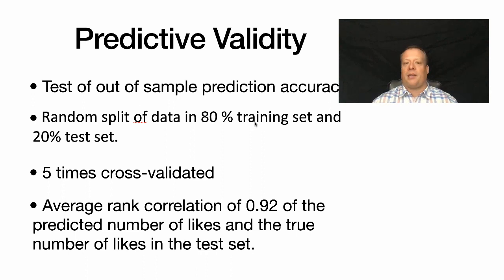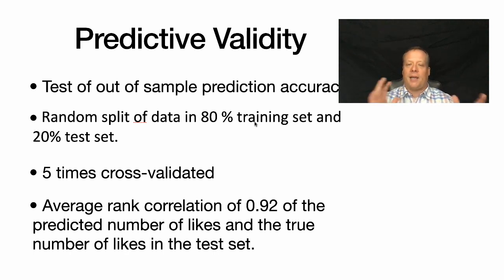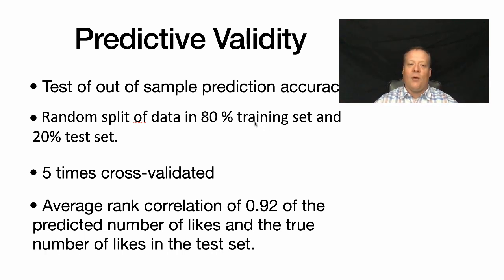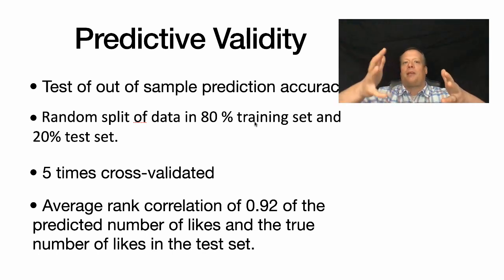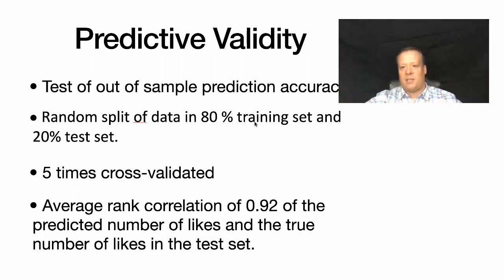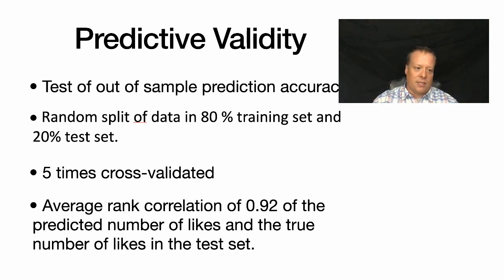We conducted a predictive validity test, splitting the data into an 80% training set and 20% testing set, with five-times cross-validation. We got an average rank correlation of 0.92 between predicted and true number of likes in the test set. We weren't predicting the exact number of likes, but rather the ordering of images from most to least popular — and a correlation of 0.92 is an extremely strong result.